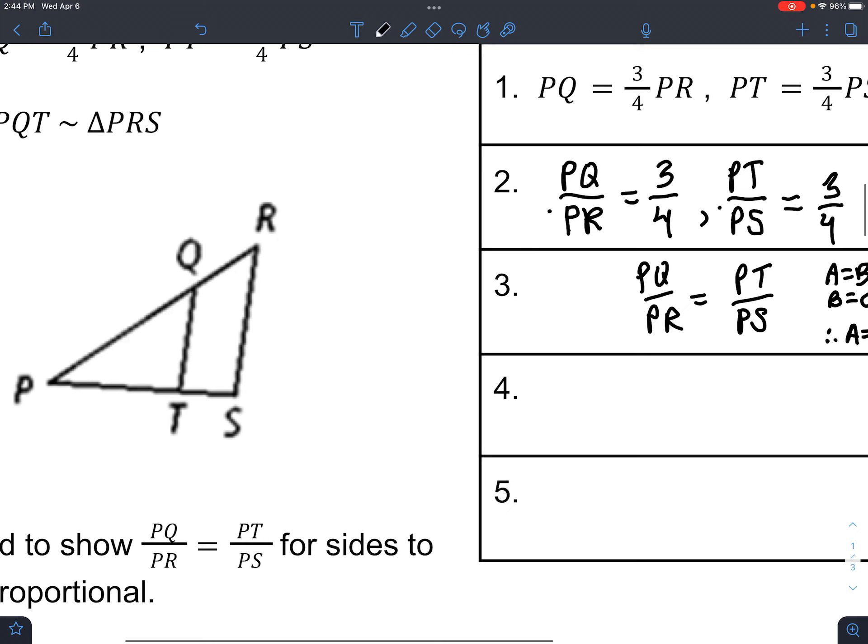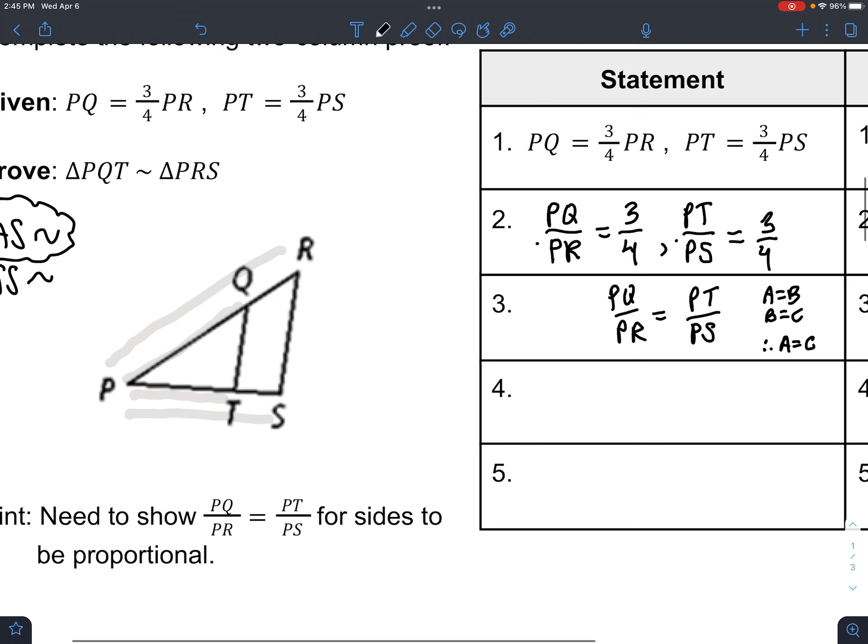But this is fantastic because what does it do? It tells us that this side, PQ to PR, is in the same ratio as PT is to PS. So it matches like small to big, small to big, so that ratio is meaningful and it means that the base and that diagonal side—they're proportional to each other in the same way. So we have the S and the S, but now we're missing an angle. And it turns out that this angle right here is included. If I draw both triangles, that angle shows up in the same spot in both.